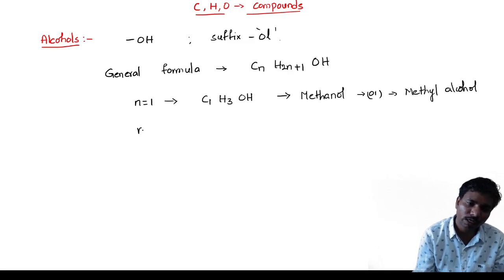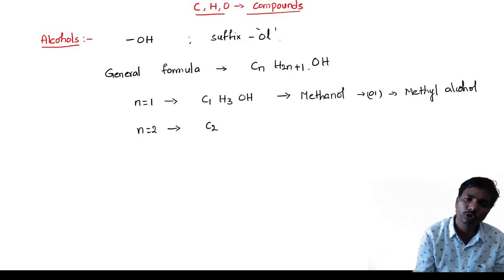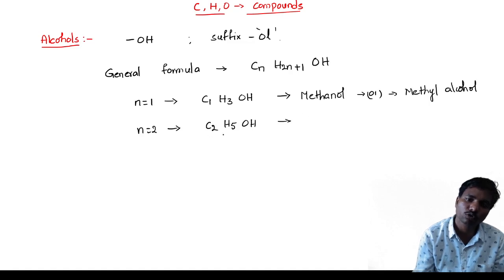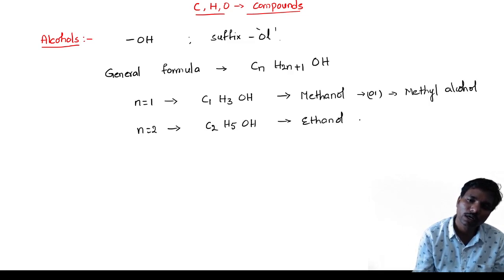If the number of carbon atoms is 2, then C₂H₅OH — because 2×2 is 4, plus 1 is 5. The number of carbon atoms is 2, so the first part is 'eth.' That gives us ethanol, or ethyl alcohol.